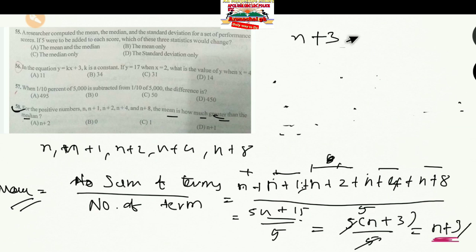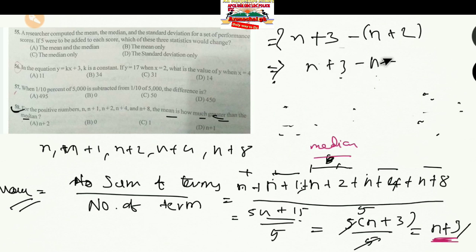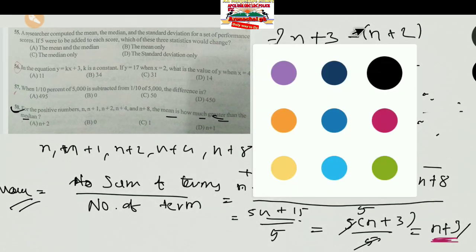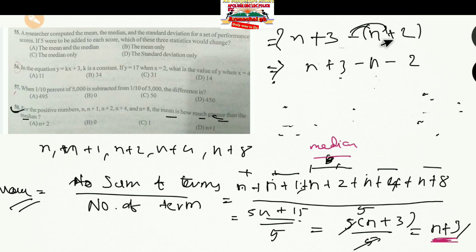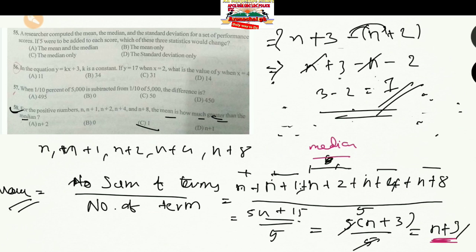Now calculating the difference: Mean − Median = (N+3) − (N+2). The N's cancel, leaving 3 − 2 = 1. So the mean is 1 greater than the median. This is the correct option. Thank you guys, hope you enjoyed! If you're new, please subscribe. See you in the next video — stay safe and study well!